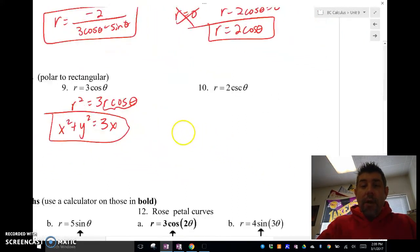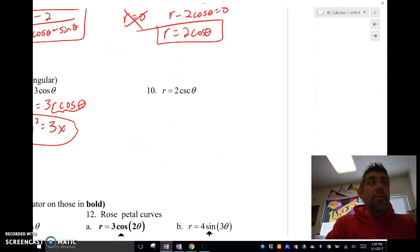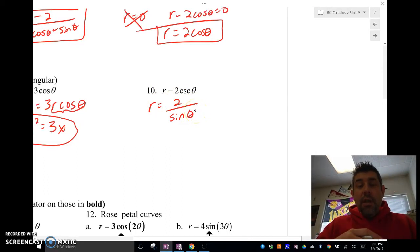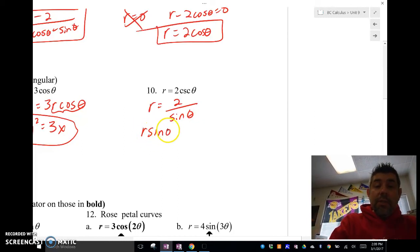Our last one here is r = 2 csc(θ). So I'm going to convert. Whenever we see a cosecant, I really don't want cosecants or cotangents or secants. I want to change them into sines and cosines. Multiply both sides, and r sin(θ) we know is y. So we get y = 2. That's it.